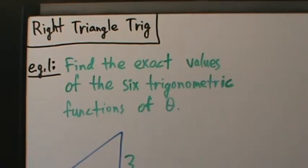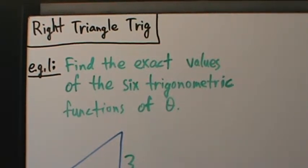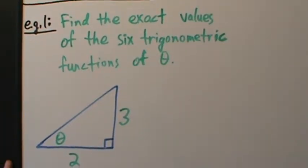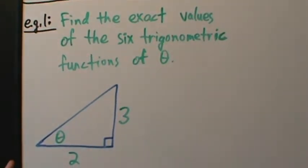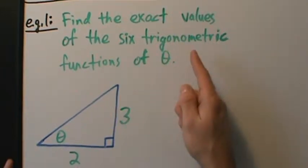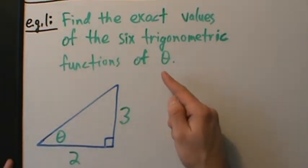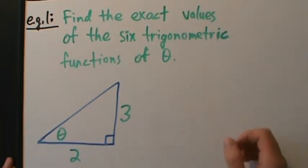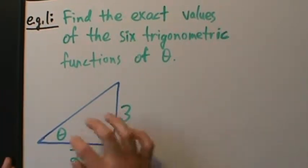Now it's time to start some examples of evaluating trig functions using the techniques and concepts from right triangle trig. Example one is going to be relatively simple compared to some we'll do later. Find the exact values of the six trigonometric functions of theta — that means sine, cosine, tangent, cosecant, secant, and cotangent.